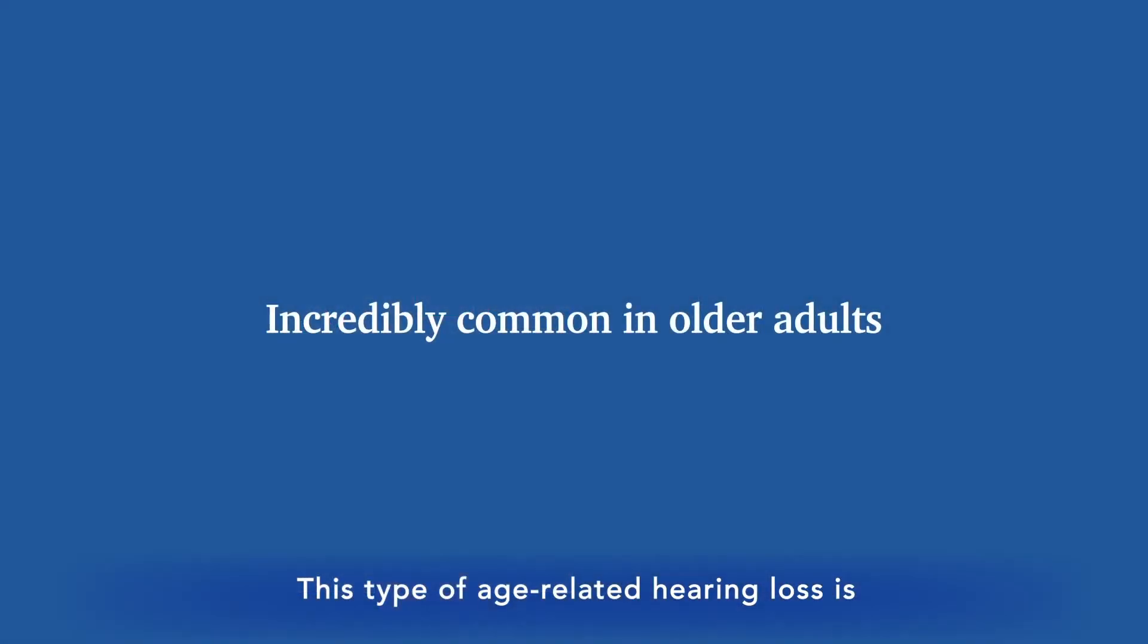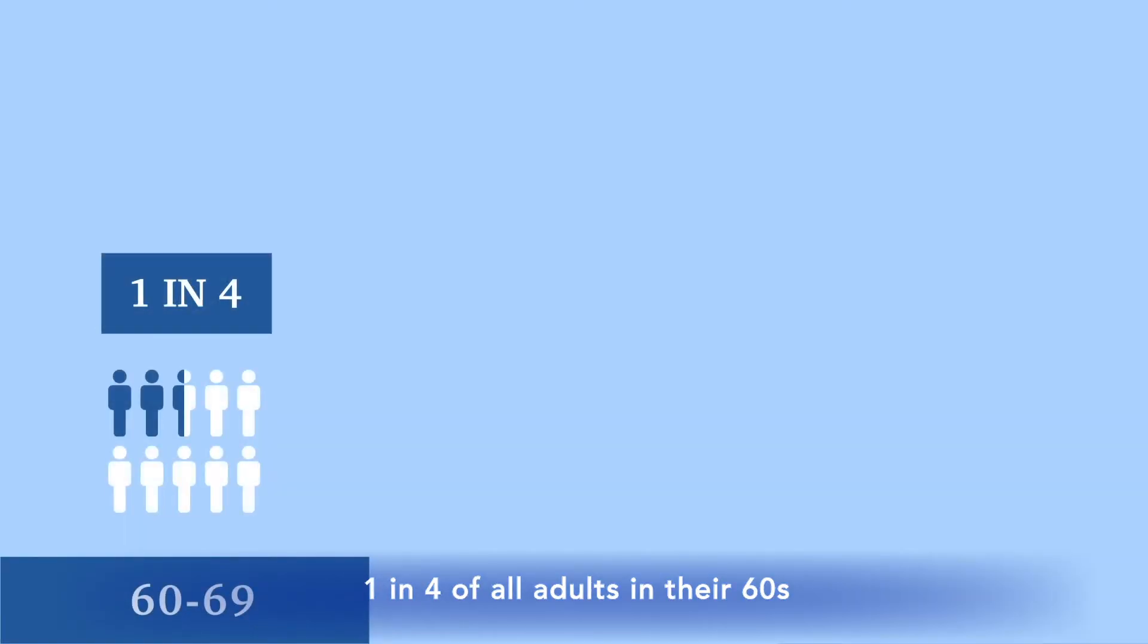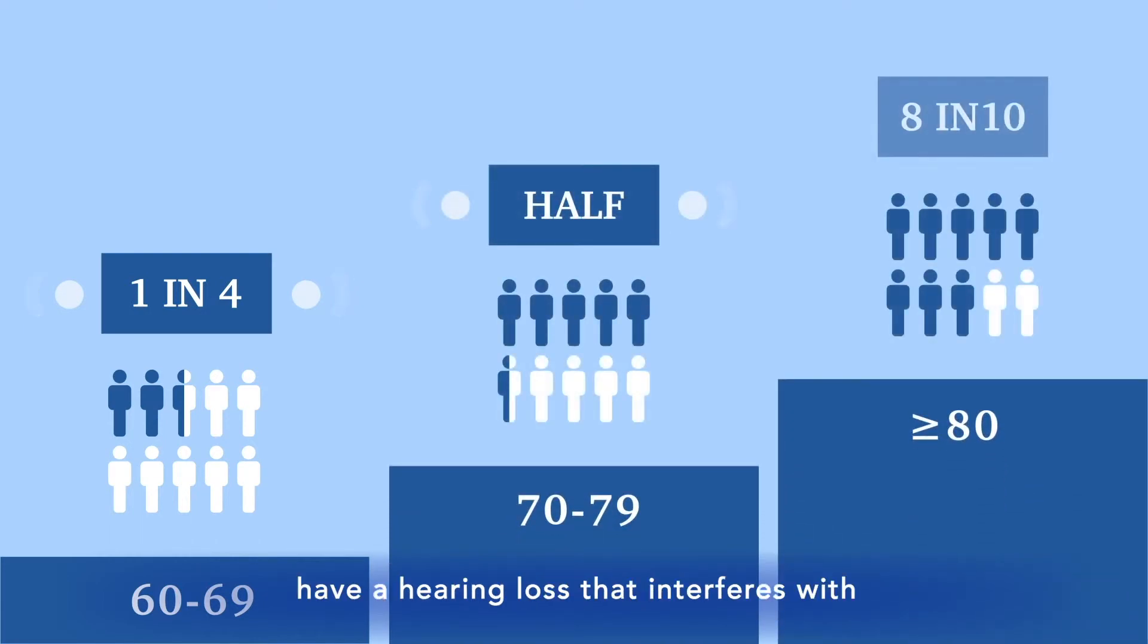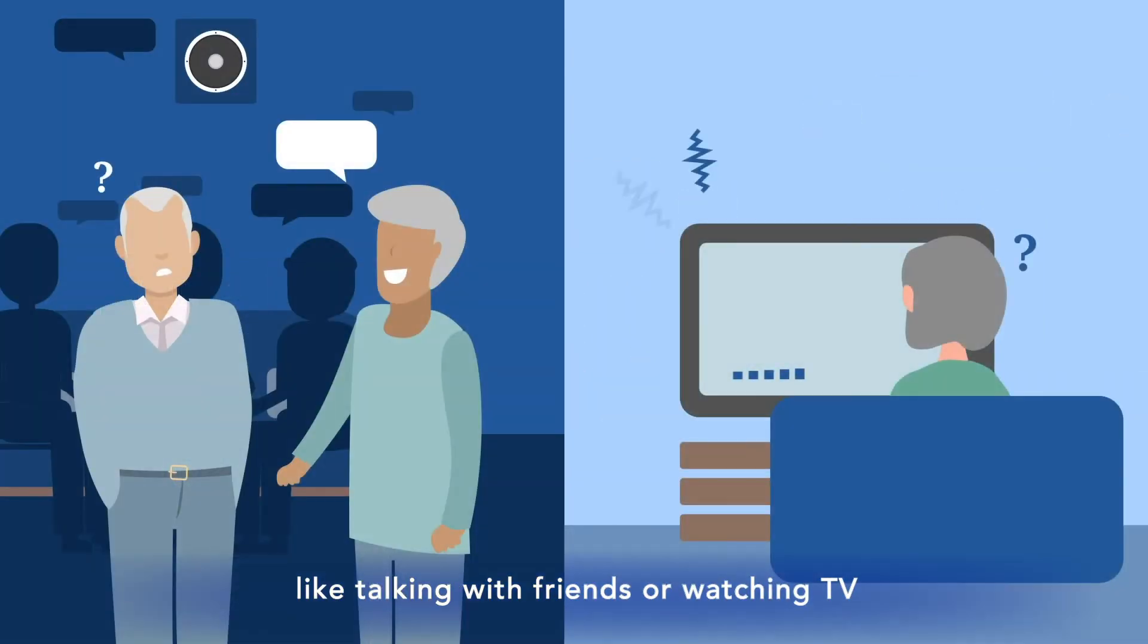This type of age-related hearing loss is incredibly common in older adults. One in four of all adults in their 60s, half in their 70s, and 8 in 10 over 80 have a hearing loss that interferes with their everyday activities, like talking with friends or watching TV.